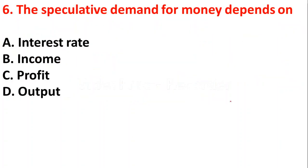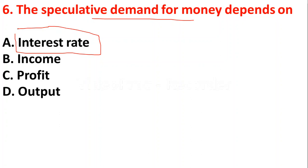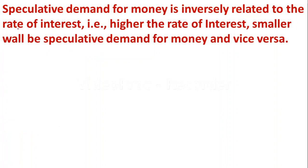The next question: the speculative demand for money depends on — Option A: interest rate; Option B: income; Option C: profit; Option D: output. The speculative demand for money depends on the interest rate. Speculative demand for money and interest rate are inversely related — higher the rate of interest, smaller the speculative demand for money, and lower the rate of interest, higher the demand for speculative motive.